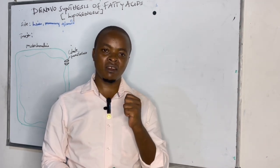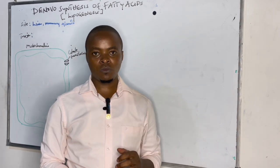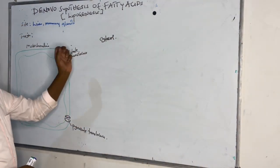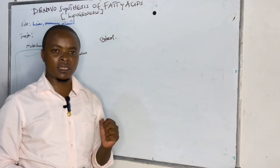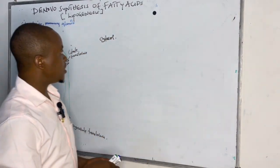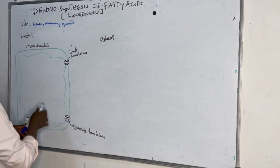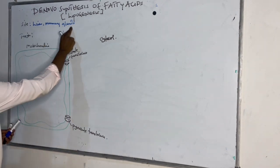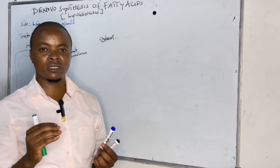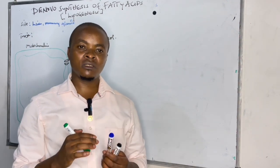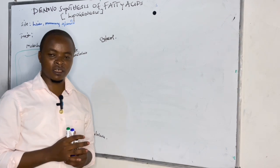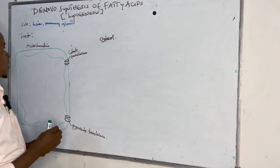The word 'de novo' means new, so we want to see how we synthesize a new fatty acid in our body. These fatty acids are formed majorly within the liver and the mammary glands. To a lesser extent, we also see it in the adipocytes and in the kidneys. That is lipogenesis.